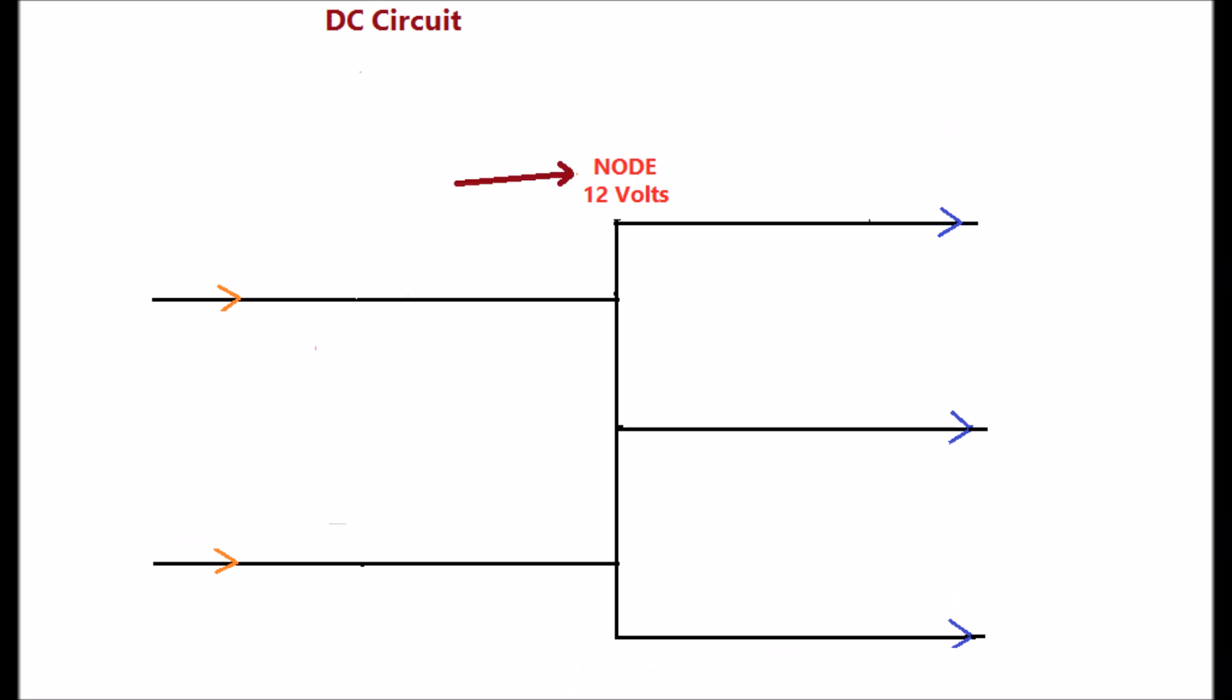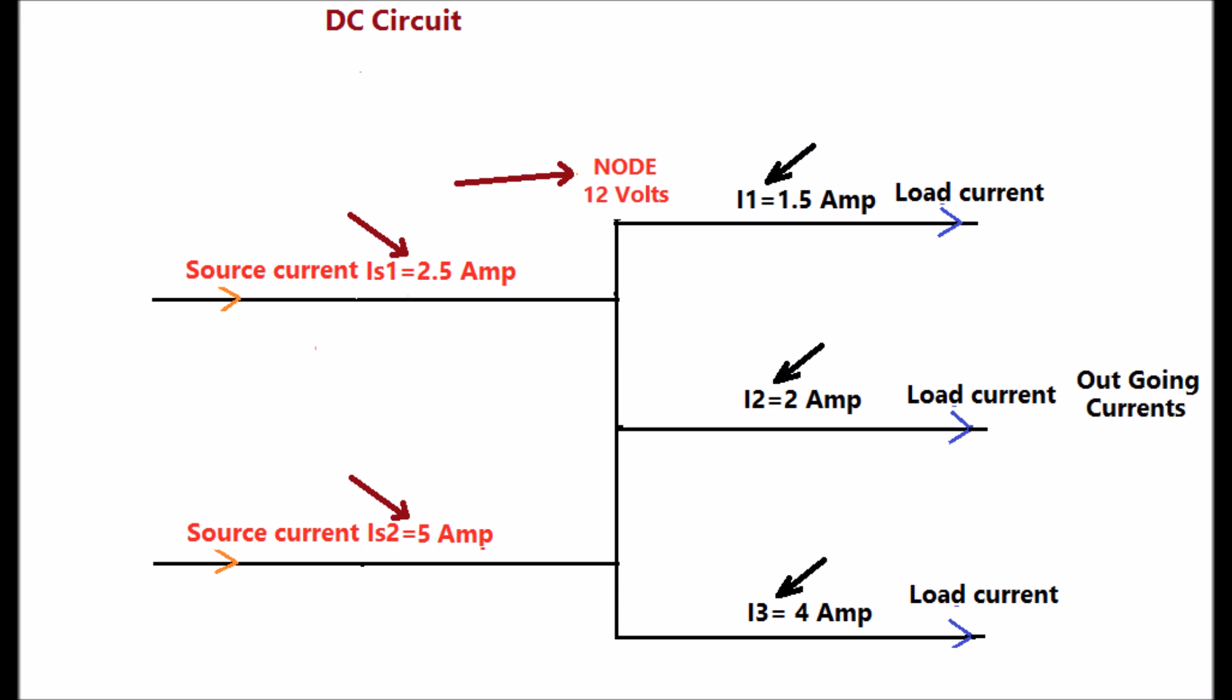For the DC circuit shown in the display at the 12V node, IS1=2.5A and IS2=5A are incident currents or source currents. I1=1.5A, I2=2A, I3=4A are load currents, that is outgoing currents. Based on KCL, the current balance is shown in the display: IS1 plus IS2 equal to I1 plus I2 plus I3 equal to 7.5A.